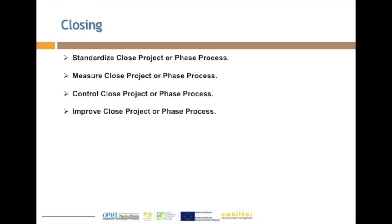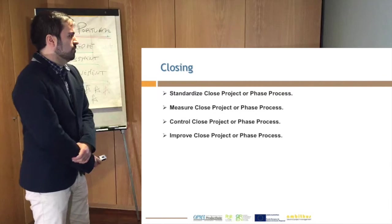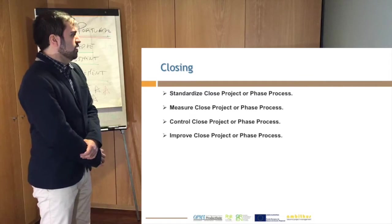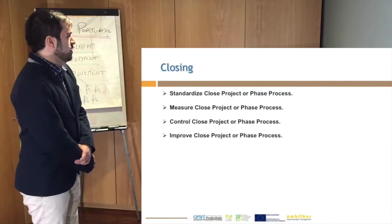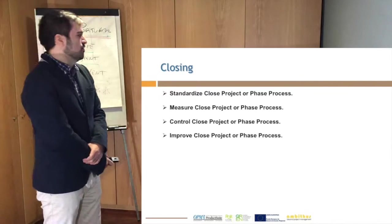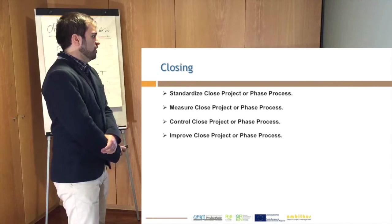Now moving on to the closing stage, we have two processes: the close project or phase process and the close procurements. For the close procurements, which is not represented here, it's because that process was already achieved — all the best practices and all the stages were achieved during the assessment. For the remaining close project process, we recommend to standardize, measure, control, and improve.